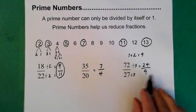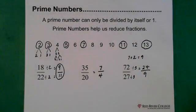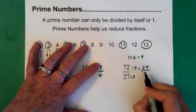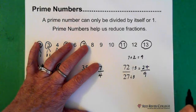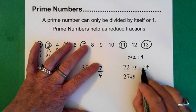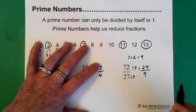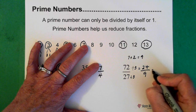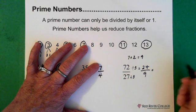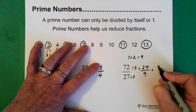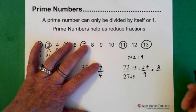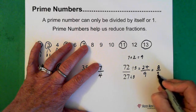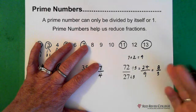Now we can stop and look at this — if you add the two and four in twenty-four, you get six, so twenty-four is also divisible by three. Twenty-four divided by three is eight, and nine divided by three is three. So that's how you'd reduce that fraction, and basically what you're looking at is prime numbers as you reduce fractions.